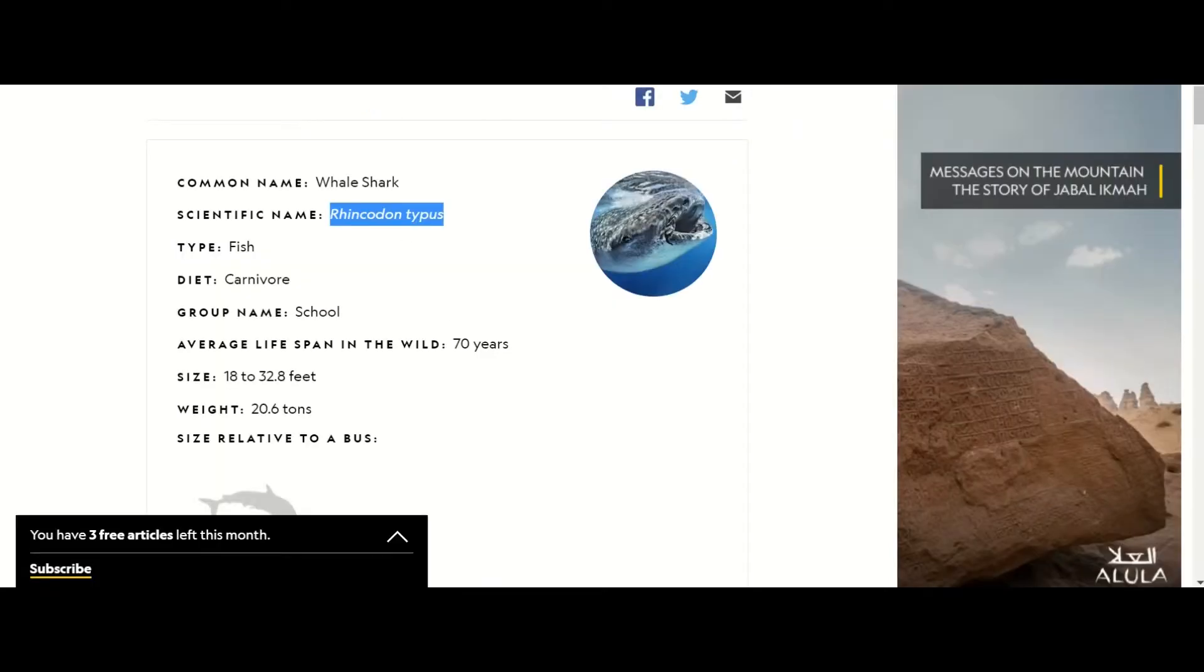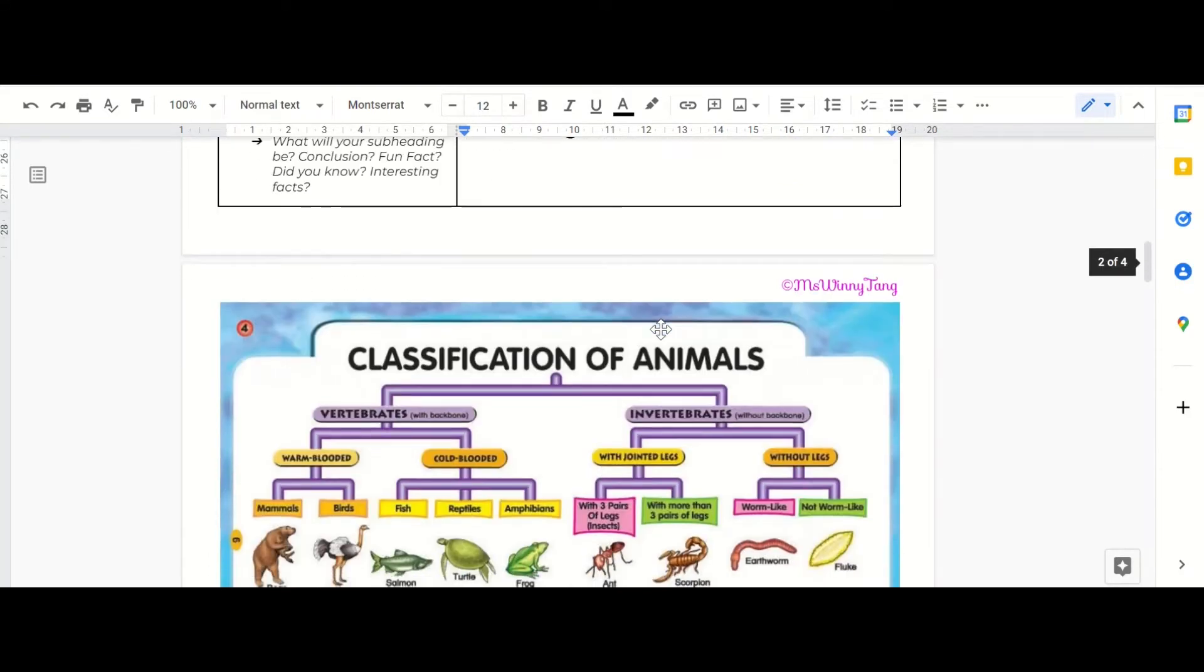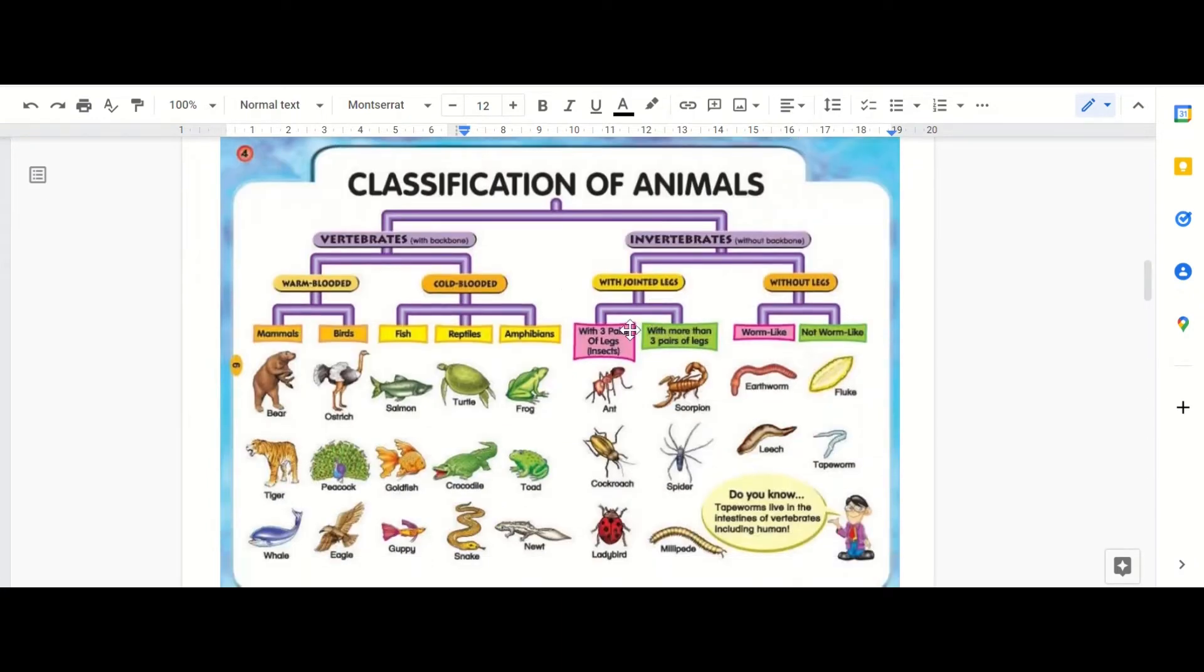Now we're going to have a look at the classification, so it is classified as a fish. And what you can also do if you're not sure what the classification is, you can have a look at this graph. So this is the classification of animals and it's split into vertebrae and invertebrates.